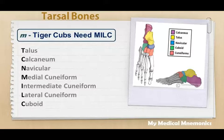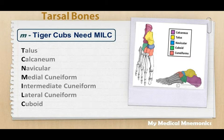Tiger is talus, Cubs is calcaneum, Need has navicular, and in Milk — M-I-L is medial cuneiform, intermediate cuneiform, lateral cuneiform, and C is cuboid.